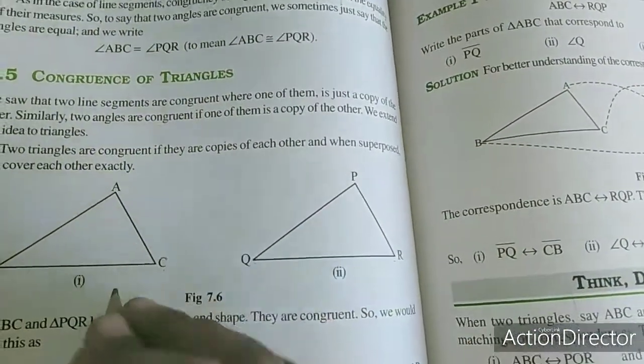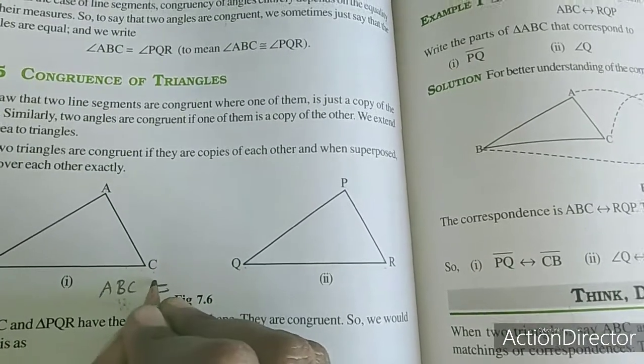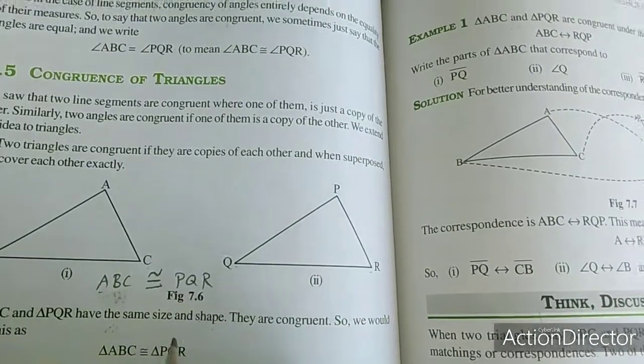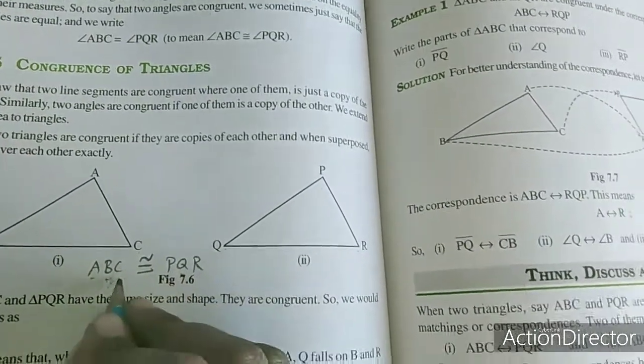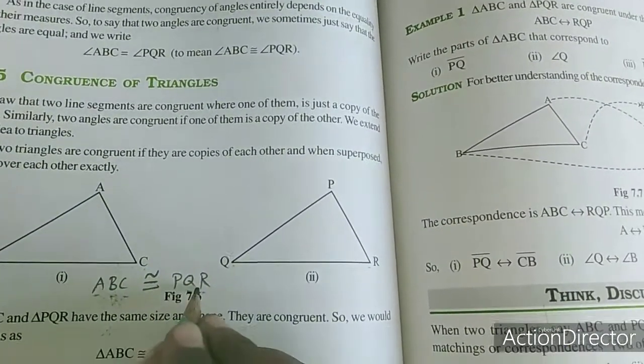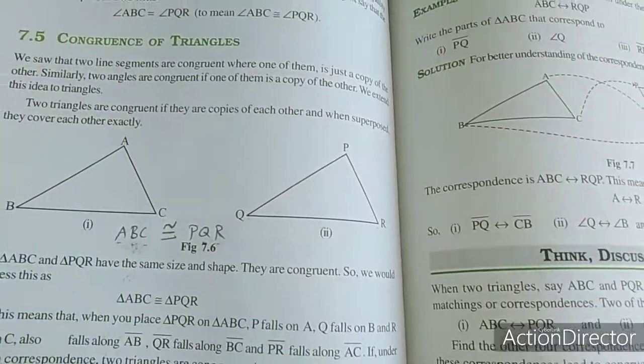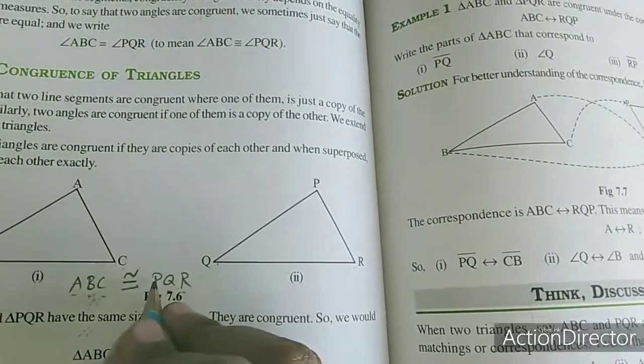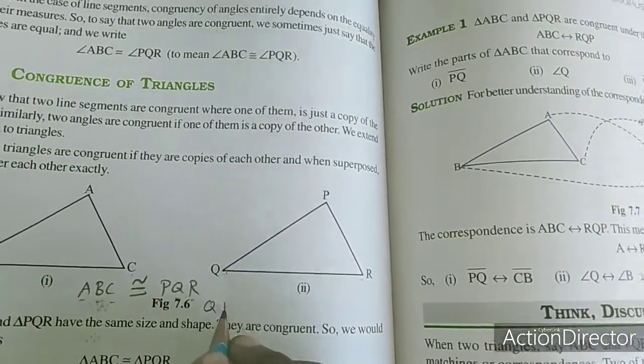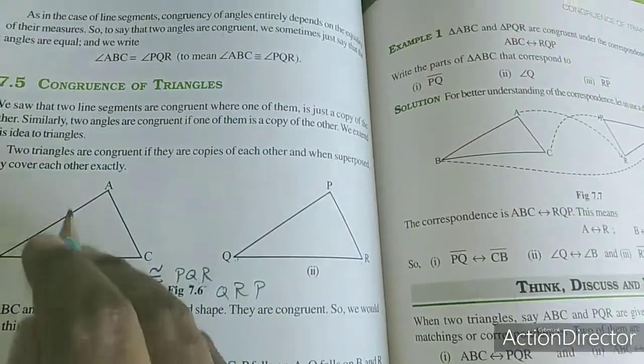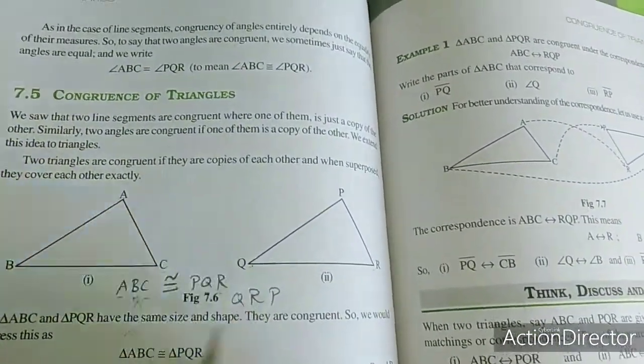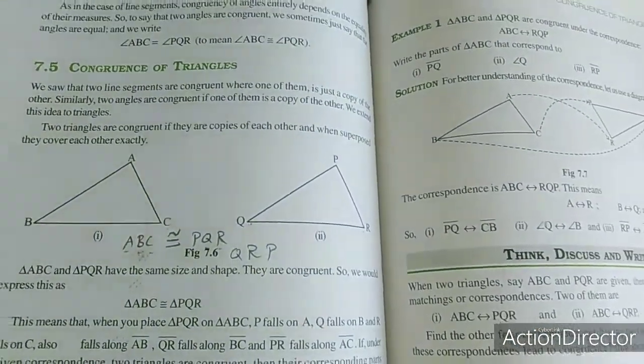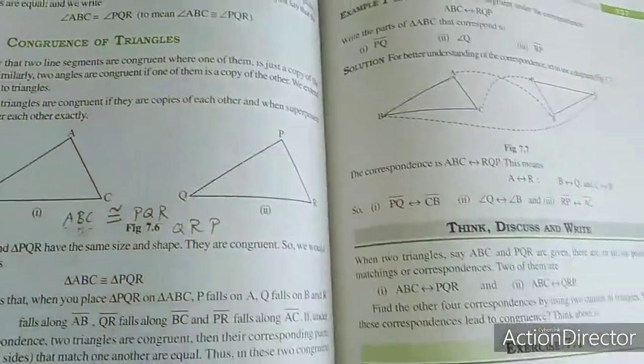Triangle ABC is congruent to triangle PQR. AB equals PQ. If the triangle's measurements and sides are fixed, you can determine the depth.